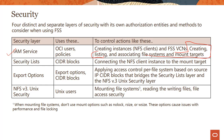Pretty straightforward — we talked about that previously. There is also the concept of security lists associated with your virtual cloud network, and network security groups, because NSGs are also available now. You could use security lists as well as network security groups — we'll talk about those in the next slide. There is also something called export options, which basically applies access control per file system based on source IP CIDR blocks, bridging the security list layer and the NFS Unix security layer.